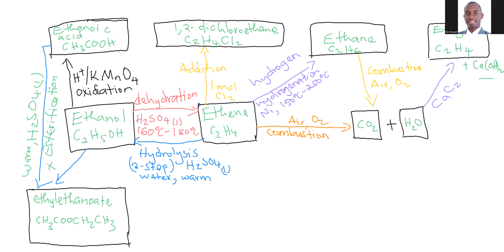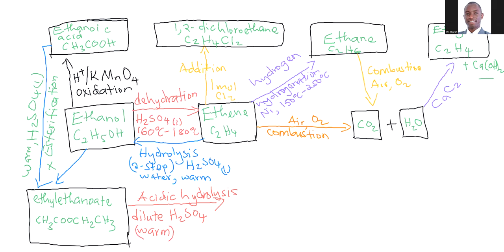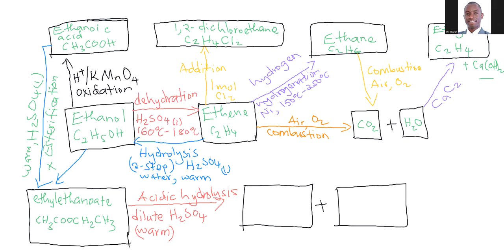Ethyl ethanoate can also be converted back to ethanol and ethanoic acid using a process we call acidic hydrolysis. For acidic hydrolysis, you just need dilute sulfuric acid or dilute hydrochloric acid. This process also takes place in the presence of some heat — some warming. It is actually the reverse of esterification. So we end up with the two products we started off with: ethanol and ethanoic acid.